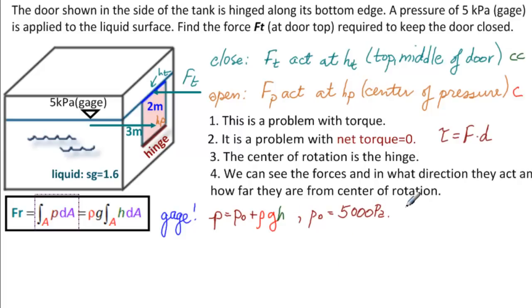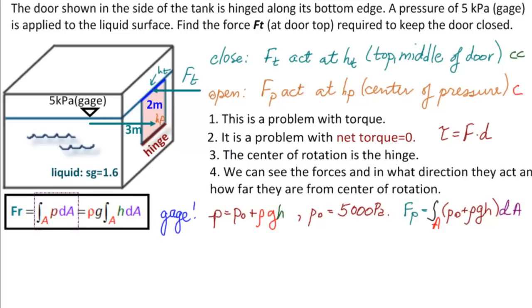Why did I say that we need to use this? Because P is equal to P0 plus rho G H, where P0 is this 5 kilopascals. So P0 is equal to 5,000 pascals. So we have the force on the door is the integral over A of P, so we have P0 plus rho G H, and then D A.